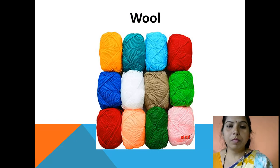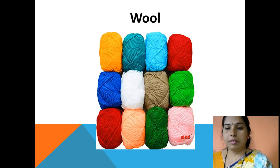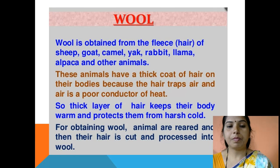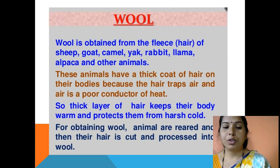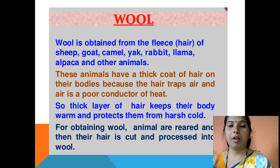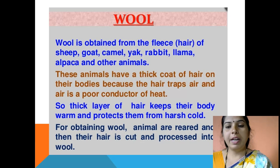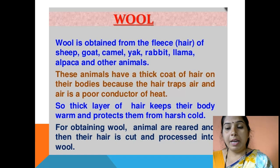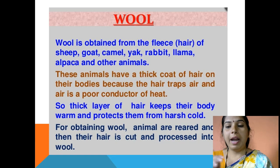Fibers such as jute and cotton are plant fibers because they are obtained from plants. Fibers such as wool and silk are animal fibers because they are obtained from animals. Here you can see various colors of wool. Wool is obtained from the fleece — the hair — of various animals like sheep, goat, camel, yak, rabbit, llama, alpaca and other animals. These animals have a thick coat of hair on their bodies because the hair traps air, and air is a poor conductor of heat. So the thick layer of hair keeps their body warm and protects them from the harsh cold. For obtaining wool, animals are reared — meaning kept like pet animals — and then their hair is cut and processed into wool.